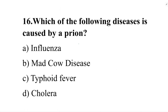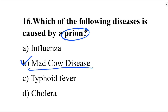Which of the following diseases is caused by a prion? Option A: influenza. Option B: mad cow disease. Option C: typhoid fever. Option D: cholera. The correct answer is option B, mad cow disease.